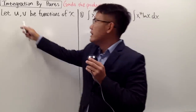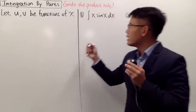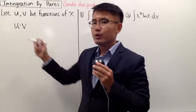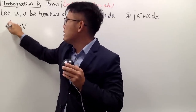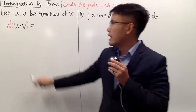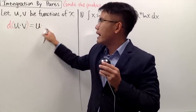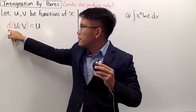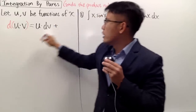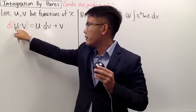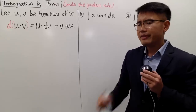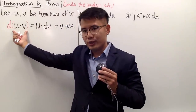We are going to start off by letting u and v be functions of x. Because we are talking about undoing the product rule for the derivative, let me just multiply u and v. I'm going to differentiate them, so I'll write down d of the product of u and v. This is just the product rule: keep the first function u and multiply by the derivative of the second, written as dv, then add the second function v times the derivative of the first, written as du.